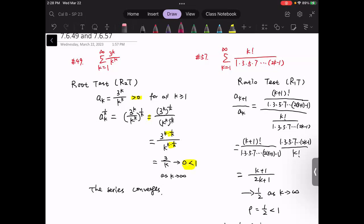Notice that (k+1) factorial can be written as (k+1) times k factorial. So we will cancel k factorial there. Moreover, we can cancel the terms like 1, 3, 5, 7.